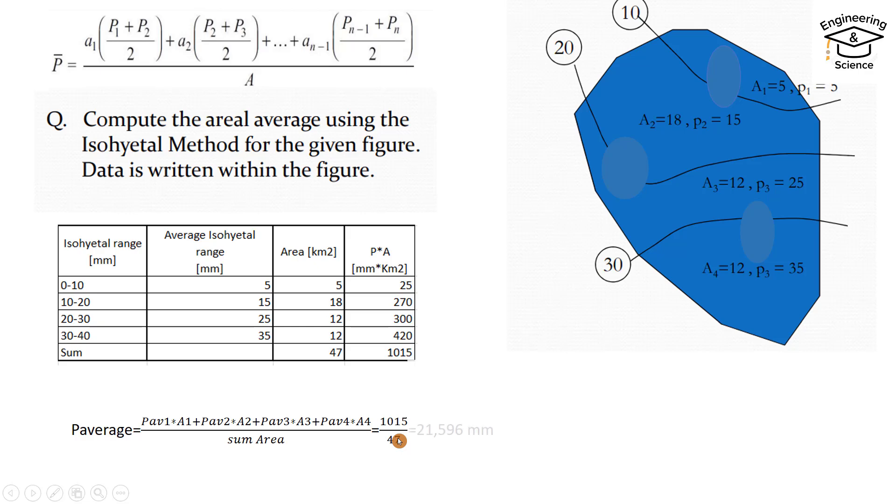Per kilometer square, it equals 21.596 millimeters. That's all, I hope it can be helpful. Have a nice day.